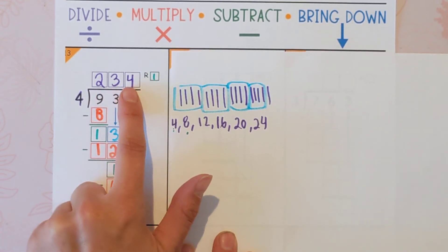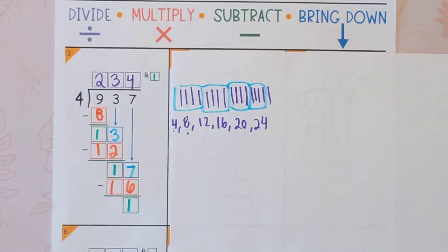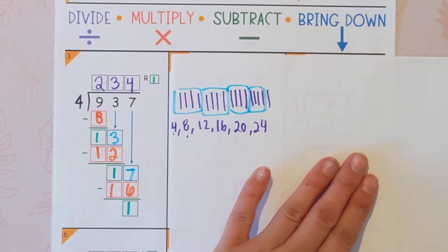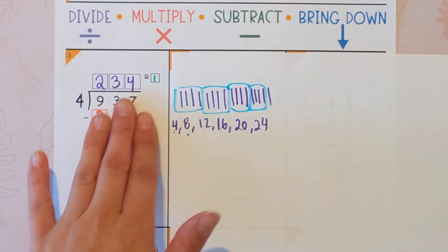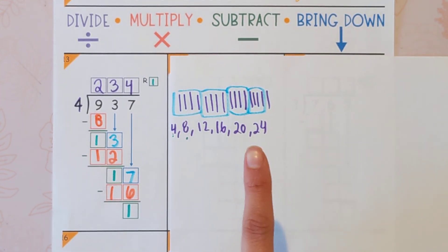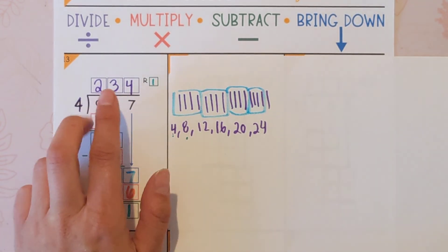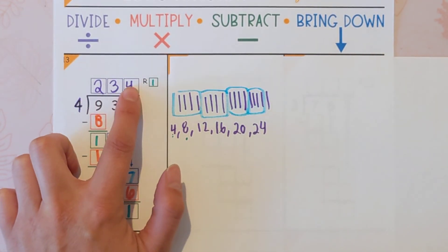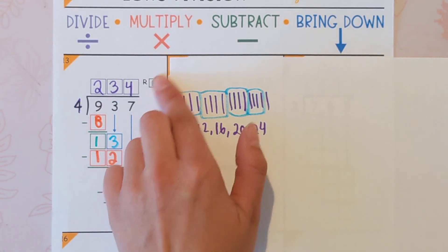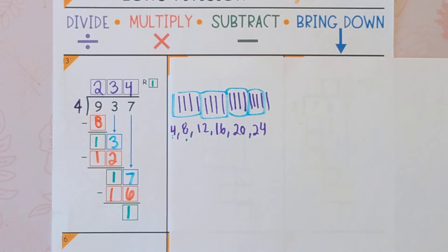So our answer, 937 divided by 4 is 234 remainder 1. That means if I actually had, you know, 937 dog treats, and I put them into four groups, I would have 234, 234, 234, 234. And then I'd have one left over that I couldn't split up. It also means if you multiply 234 times 4, you're going to get 936, and then when you put that one back in, that gets you up to 937.